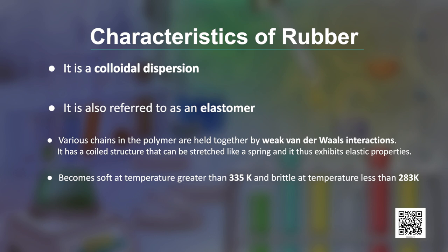Natural rubber becomes soft at temperatures greater than 335 Kelvin and brittle at temperatures less than 283 Kelvin. It has high water absorption capacity and is soluble in polar solvents. An important property is that it readily undergoes oxidation, involving addition of oxygen at a double bond, leading to the formation of new oxygen-containing functional groups. This reaction changes the structure and properties of natural rubber.